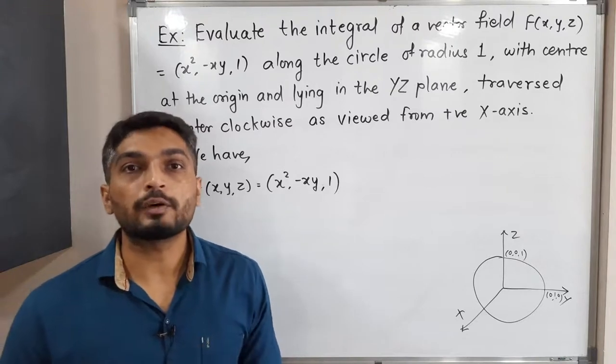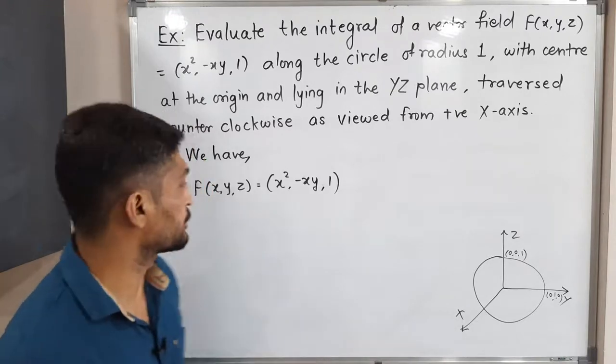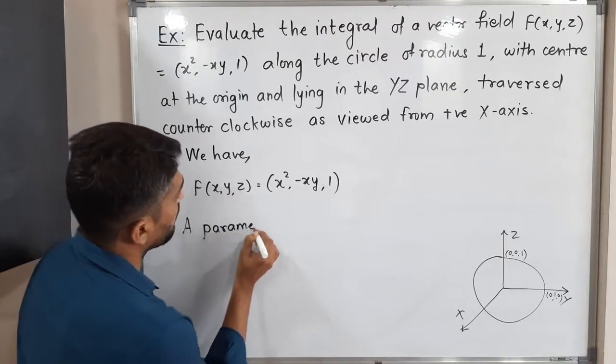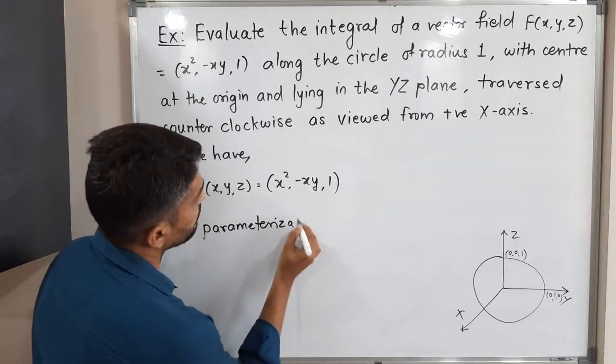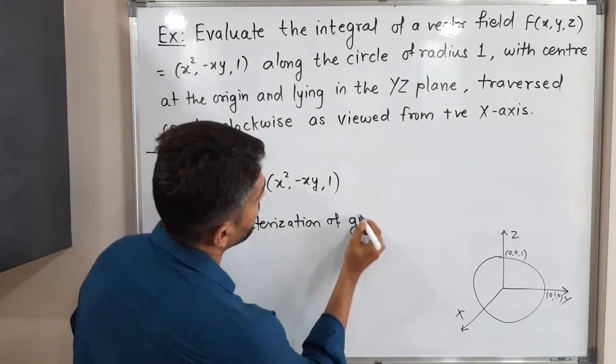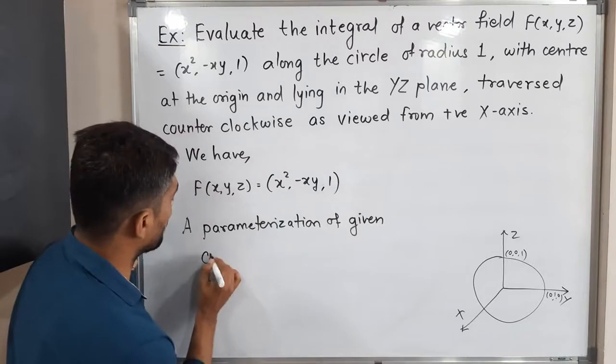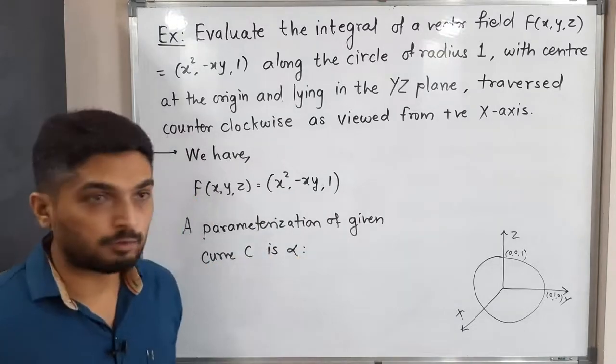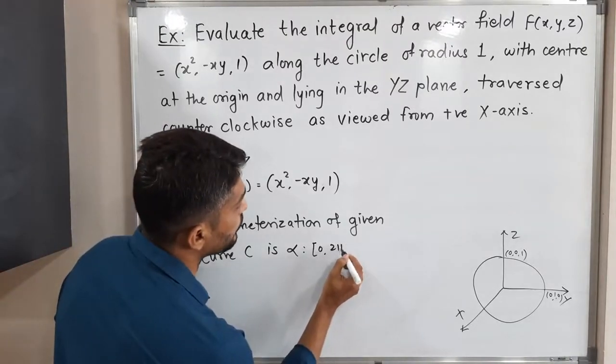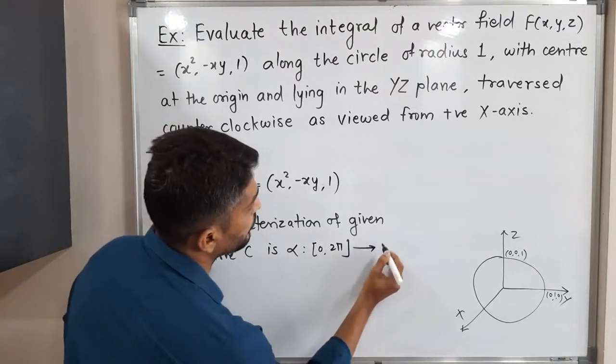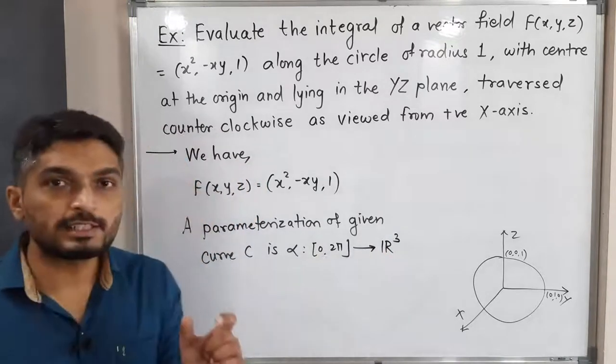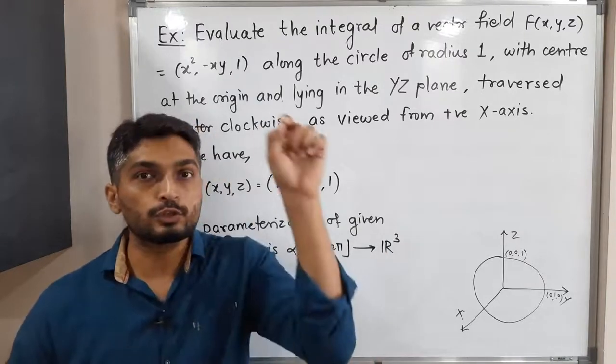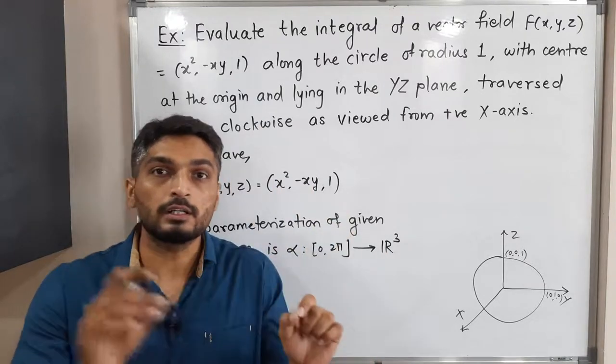So after that, what we have to do, we have to find its parametrization. So let us find its parametrization. A parametrization of given curve C is, I'm calling it as α which is defined on closed interval [0, 2π] to R³. I have defined on closed interval [0, 2π] since we have to cover a complete circle. So that's why the angle should be from 0 to 2π to cover a complete circle.